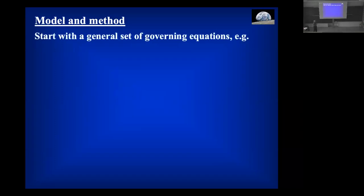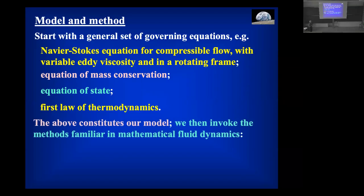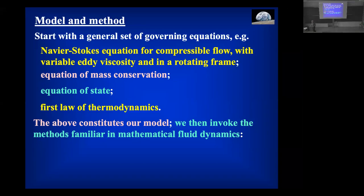So, model and method. As indicated, we start with a full set of general governing equations — for example, the Navier-Stokes equations for compressible flow with variable eddy viscosity, in a rotating frame, in spherical coordinates. We need an equation of mass conservation, an equation of state, and the first law of thermodynamics. That constitutes our model. Once you've made those decisions, we do no more modelling — we do formal non-dimensionalisation and asymptotics on the equations.